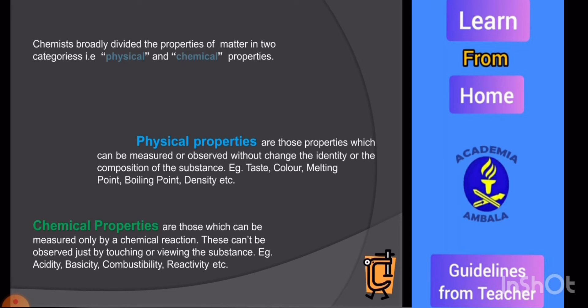Chemists broadly divide the properties of matter into two categories: physical and chemical properties. Physical properties are those which can be measured or observed without changing the identity or composition of the substance, for example, taste, color, melting point, boiling point, density, etc. Chemical properties are those which can be measured only by a chemical reaction. These can't be observed just by touching or viewing the substance, for example, acidity, combustibility, reactivity, etc.